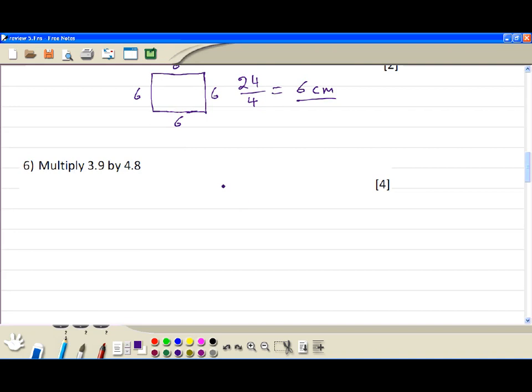Multiply 3.9 by 4.8. First we write 39, one decimal going to the right, times 48, one more decimal going to the right. Now we do the long multiplication here. 8 times 9 is 72, then we carry 7. 8 times 3 is 24, 24 plus 7 is 31.